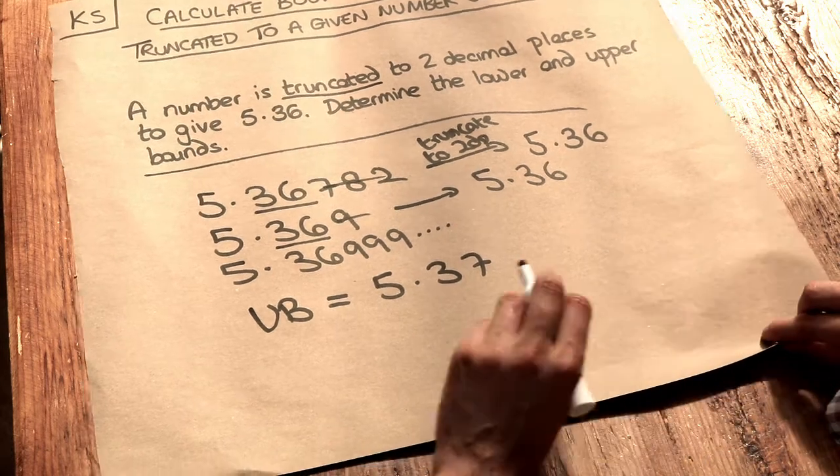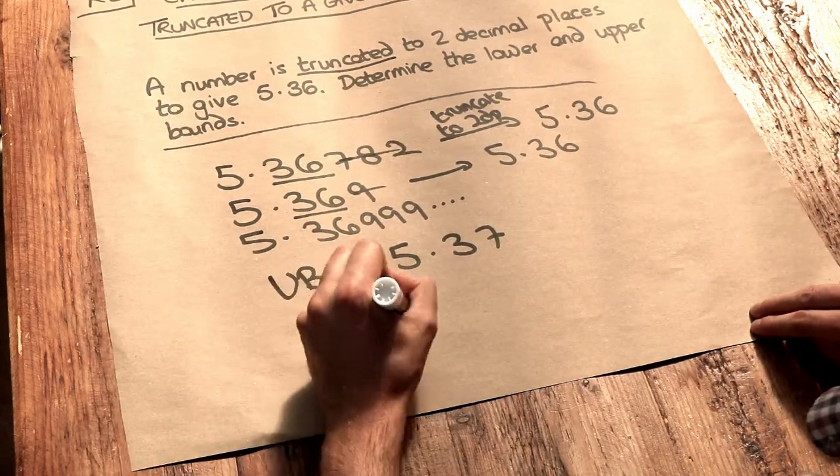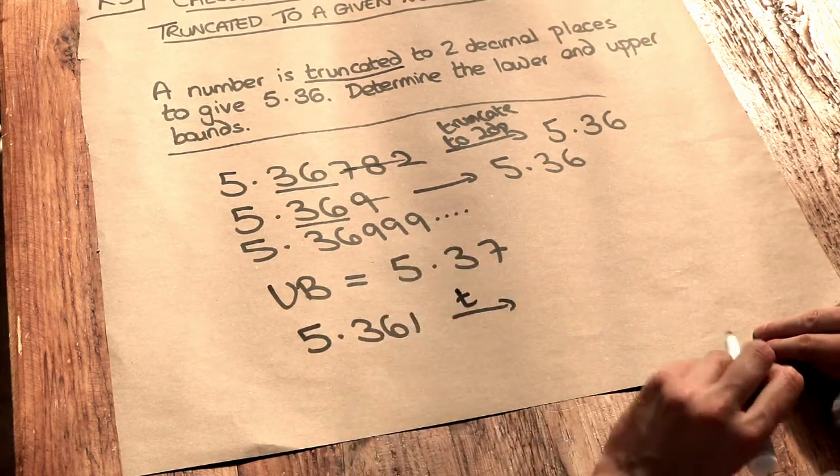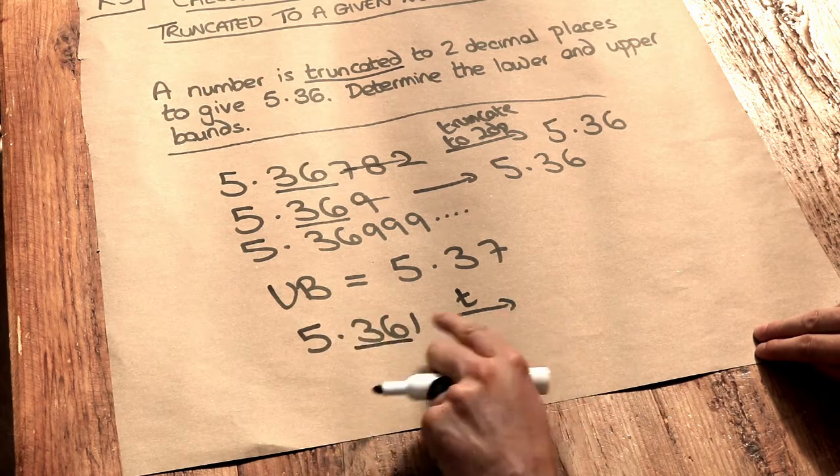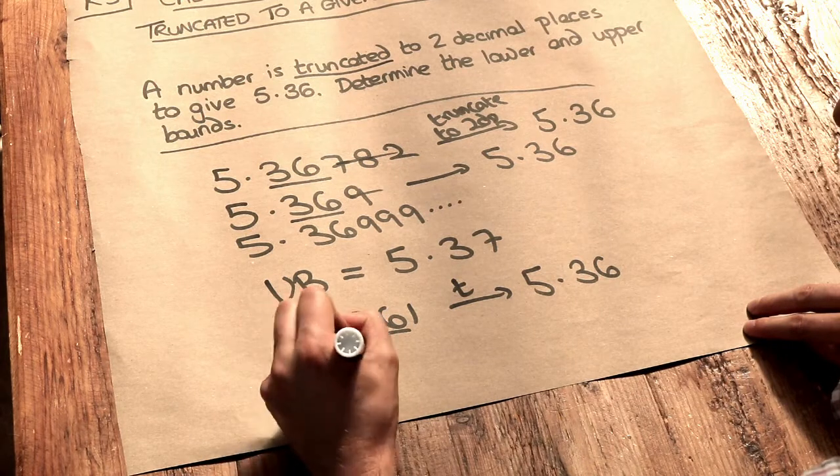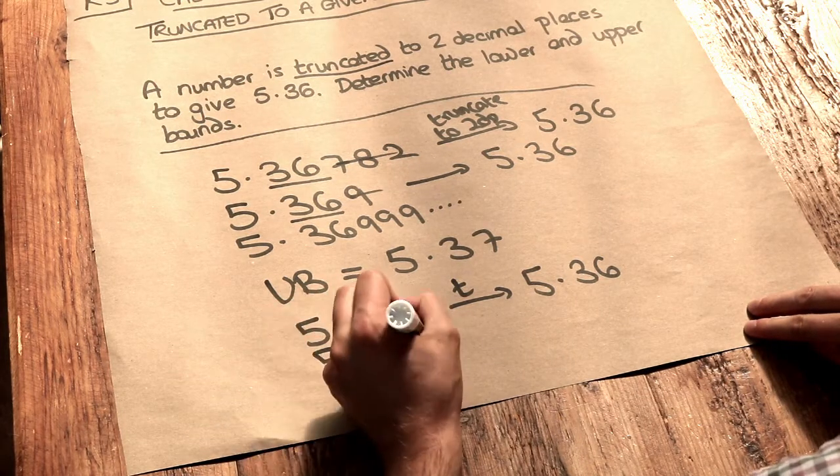What about the lower bound? If we had, for example, 5.361 and we truncated it to two decimal places, well, we'd look at the first two digits, discard everything after, it would be 5.36. And 5.36 itself, with a zero on the end, that also truncates to 5.36.